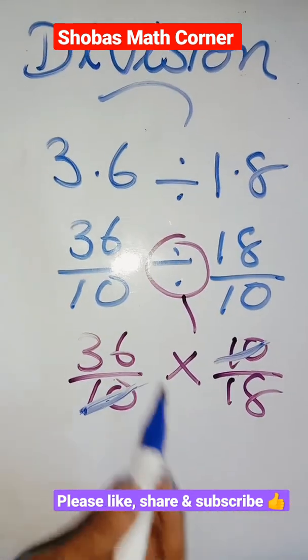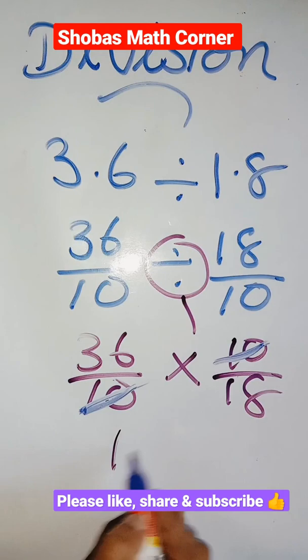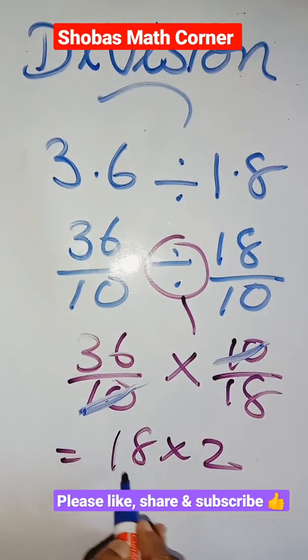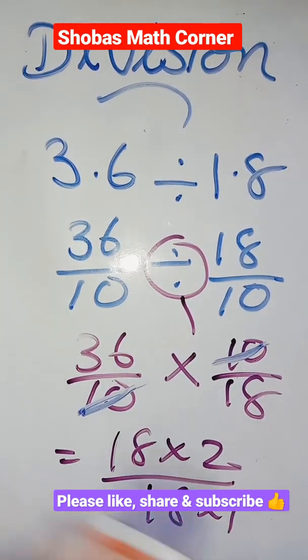Then 36 by 18. 36 I can write as 18 into 2, divided by 18. 18 means 18 into 1.